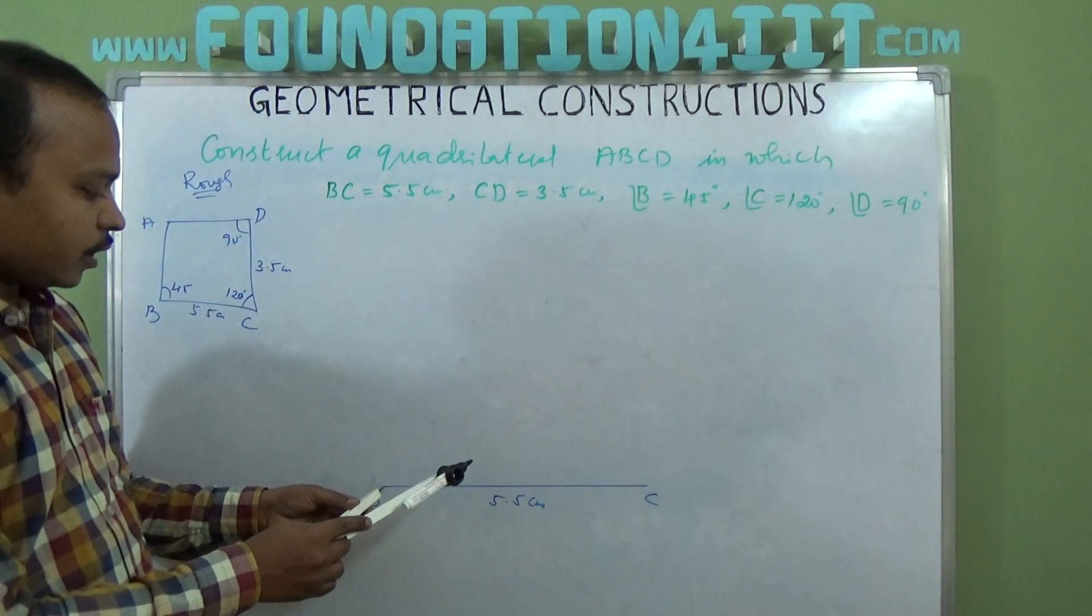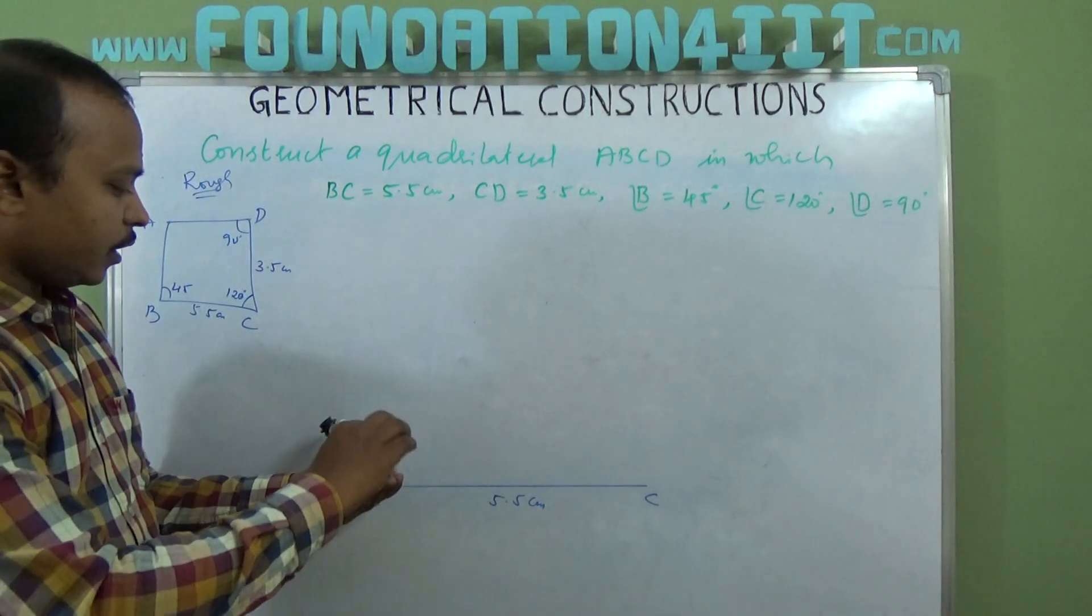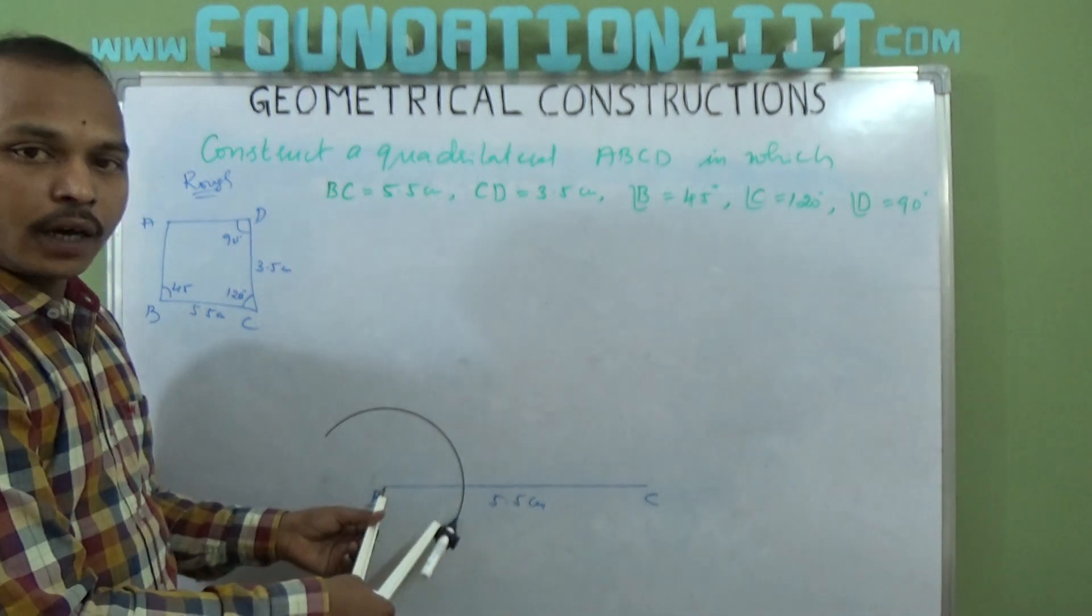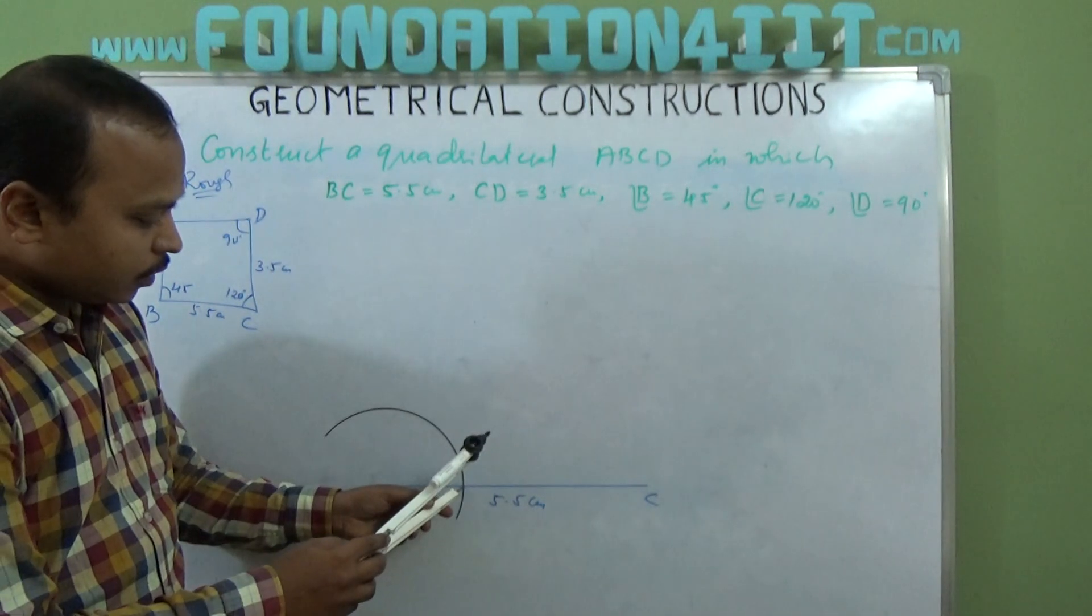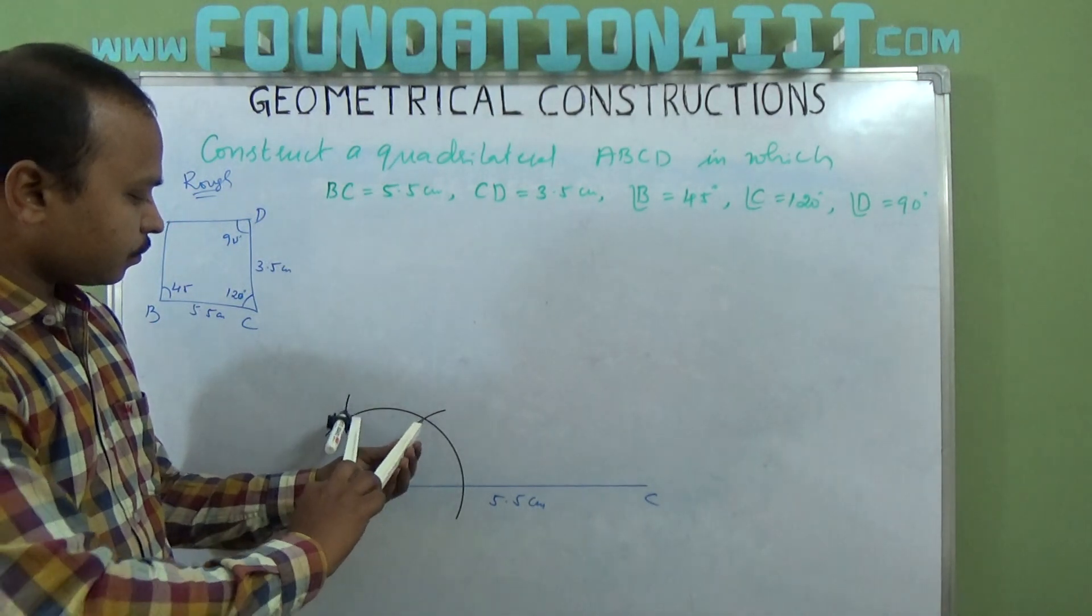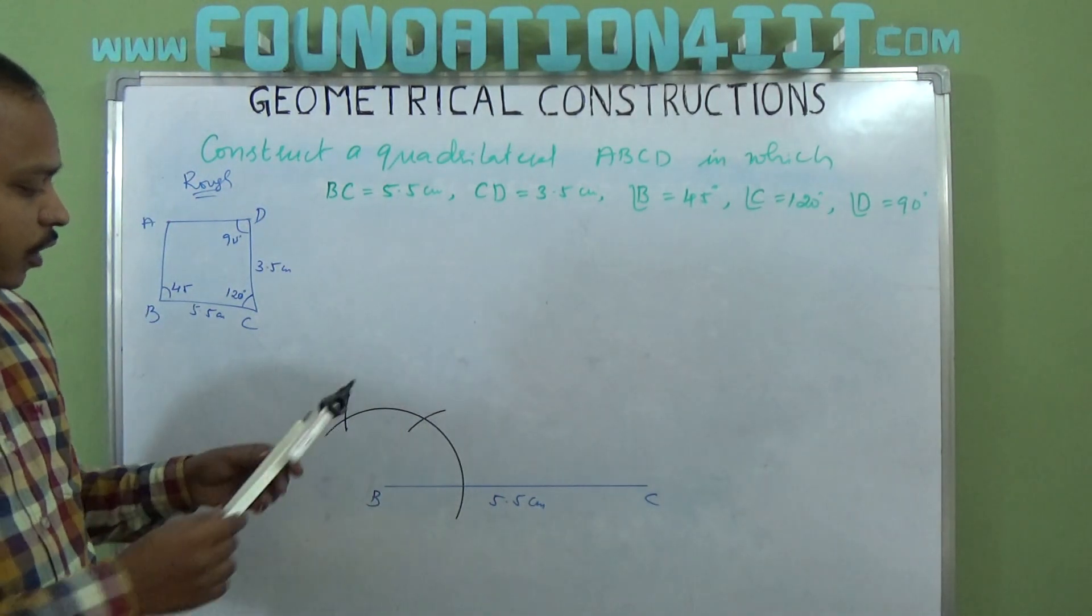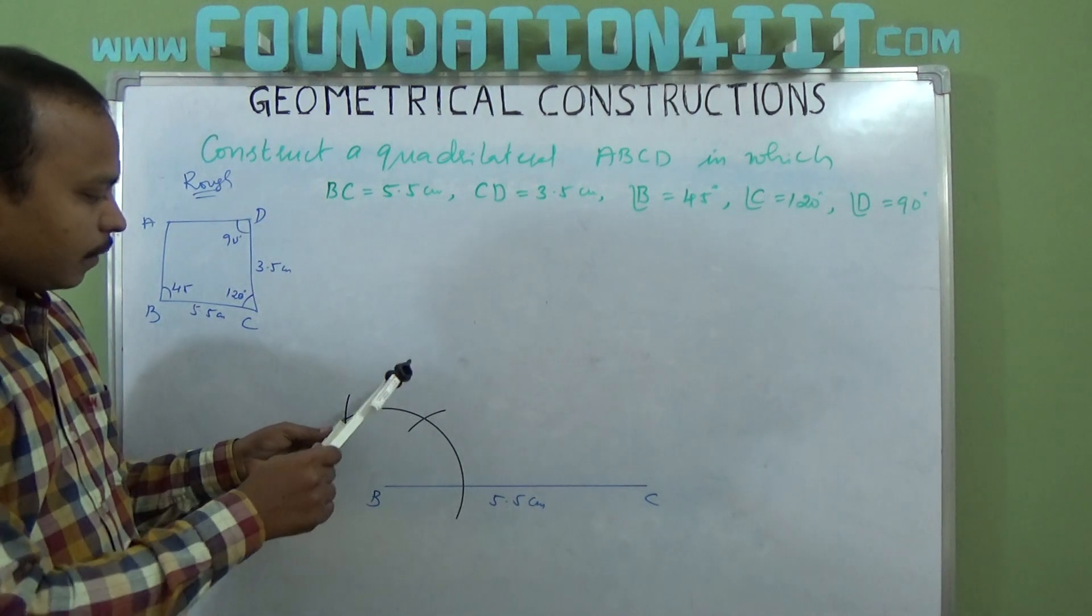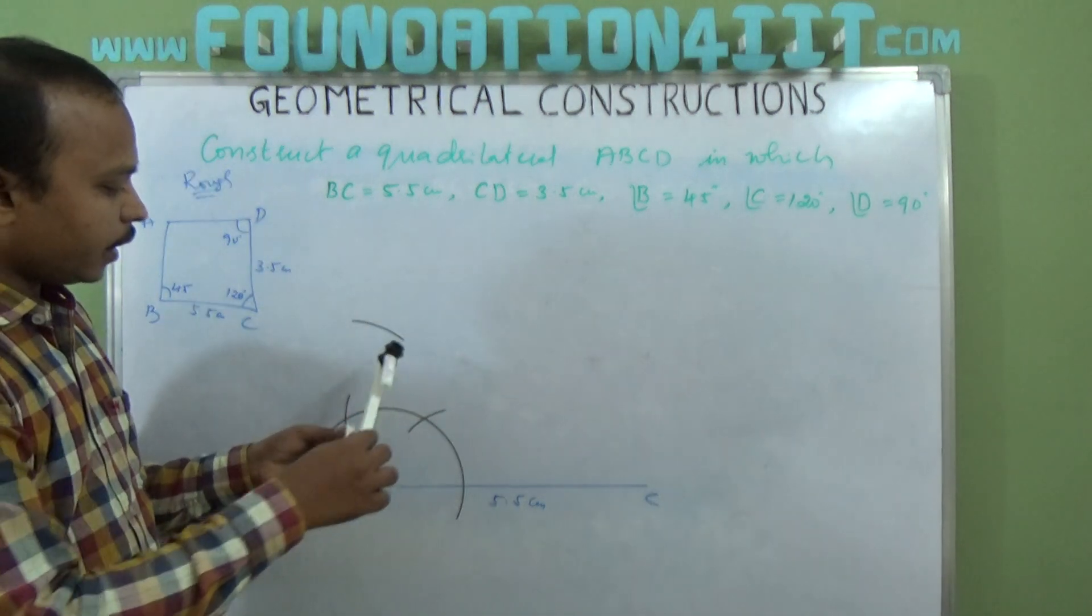So 45 degrees we need to construct here. That means first we need 90. So draw an arc. With this you cut. This two times you'll get 60 and 120. If you bisect the angle you'll get 90.